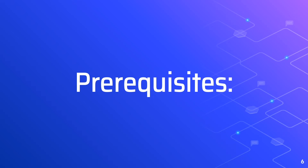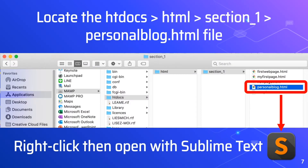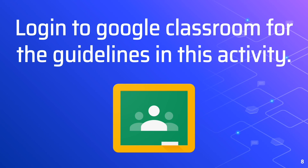Locate the htdocs HTML section 1 folder and your personal blog.html file. Right click on that file once you have located it and then open it with Sublime Text. The guidelines for this activity are posted in Google Classroom. Please log in to your Google Classroom account for this particular activity.